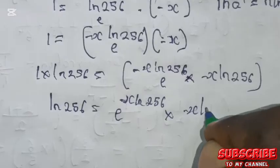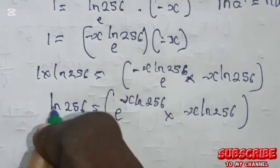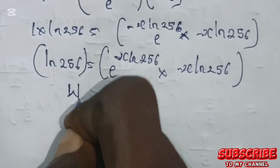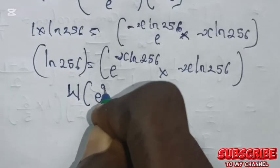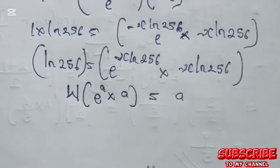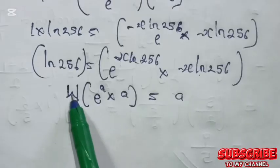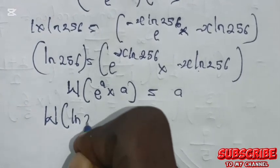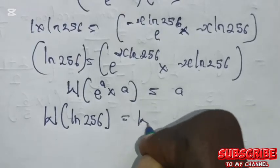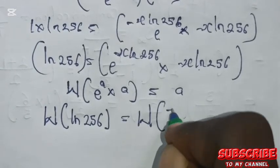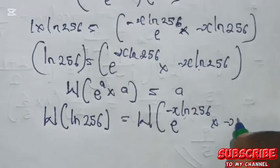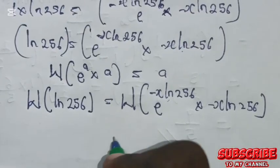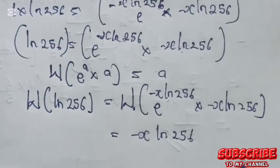Multiplied by minus x times the natural log of 256 in brackets. Now let's recall the property of the Lambert W function: W(a times e^a) equals a. Looking at our right-hand side, it is similar to this form, so we take the Lambert W of both sides. Therefore, W of the natural log of 256 equals W of e raised to the power of minus x times the natural log of 256, multiplied by minus x times the natural log of 256. The right-hand side evaluates to minus x times the natural log of 256.